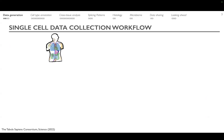For Tabula Sapiens, we paid special consideration to data collection. We are very interested in collecting as many tissues and organs from a single donor as possible, because this opens the door to organ-to-organ comparison while discounting the variation that comes from person to person.